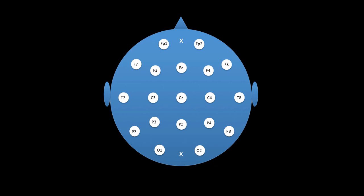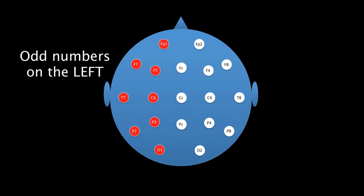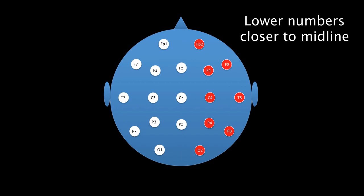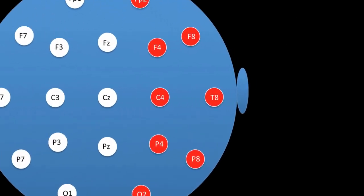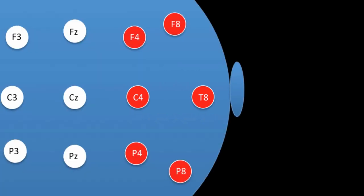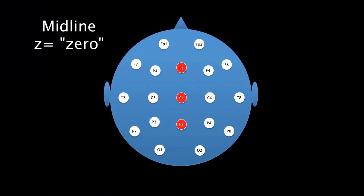The electrodes are labeled as shown here. The system is very simple — each electrode is represented by letters and a number. The numbers indicate the side of the head: odd numbers are on the left side, and even numbers are on the right. In general, lower numbers mean the electrode is closer to the midline. So C4 is closer to the midline than T8. The midline itself is represented by a Z, which stands for zero.